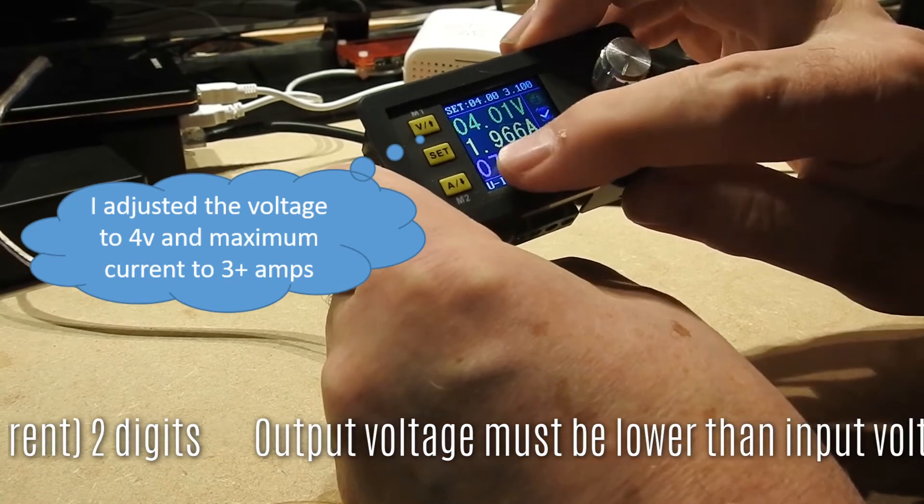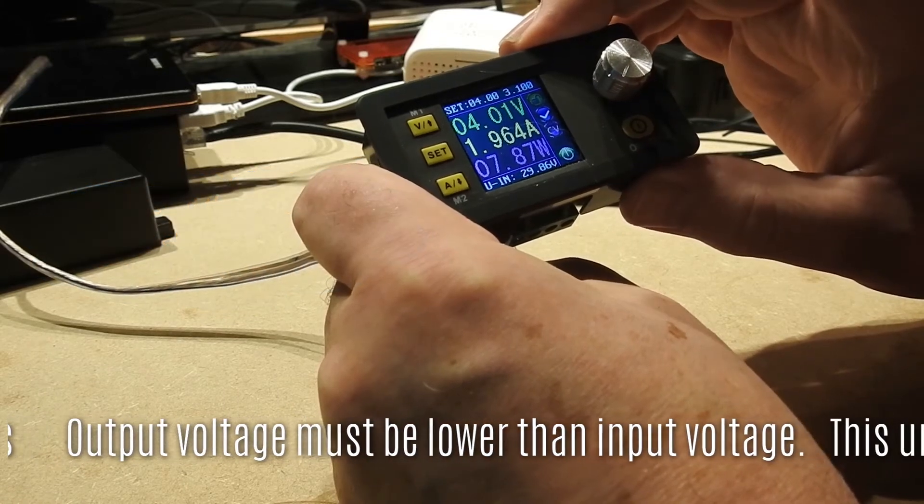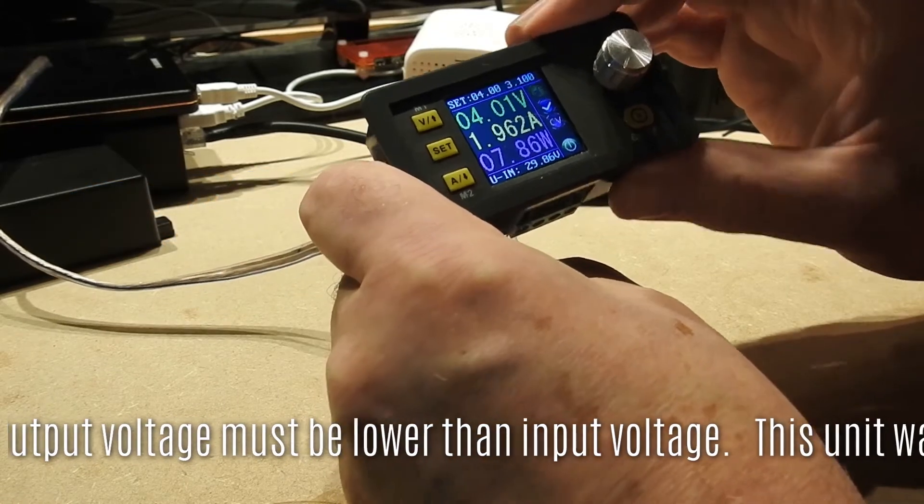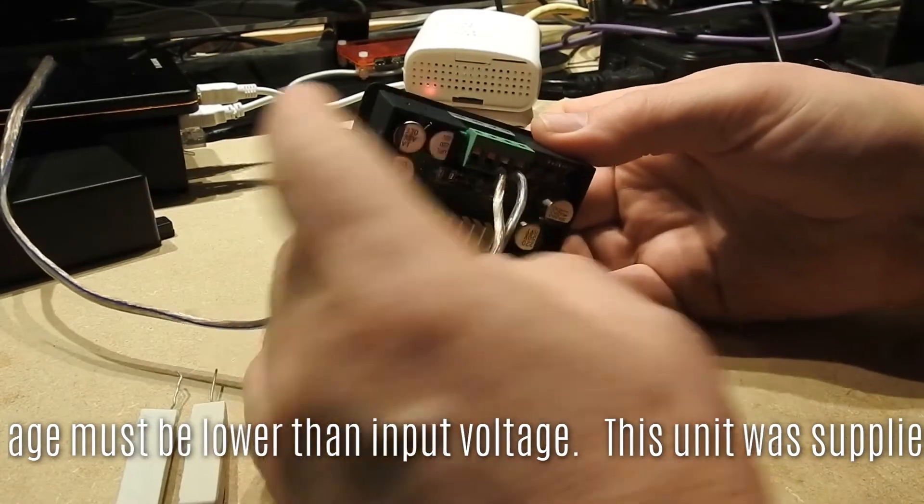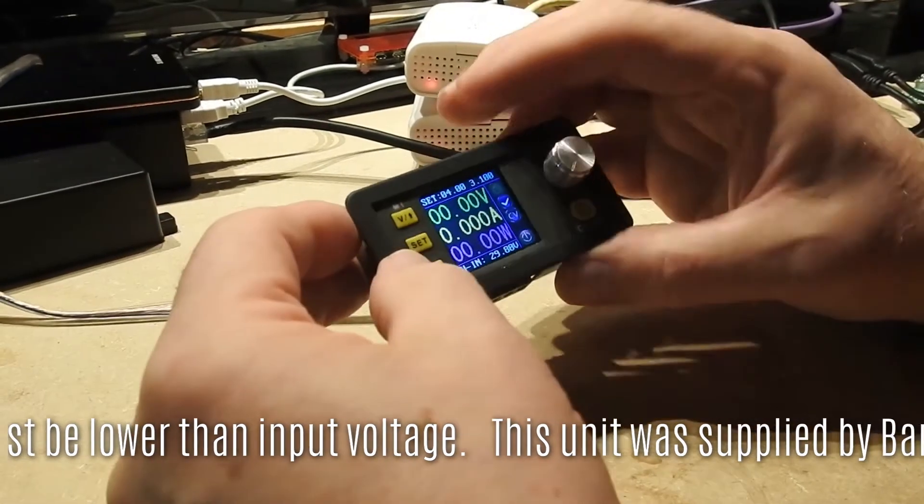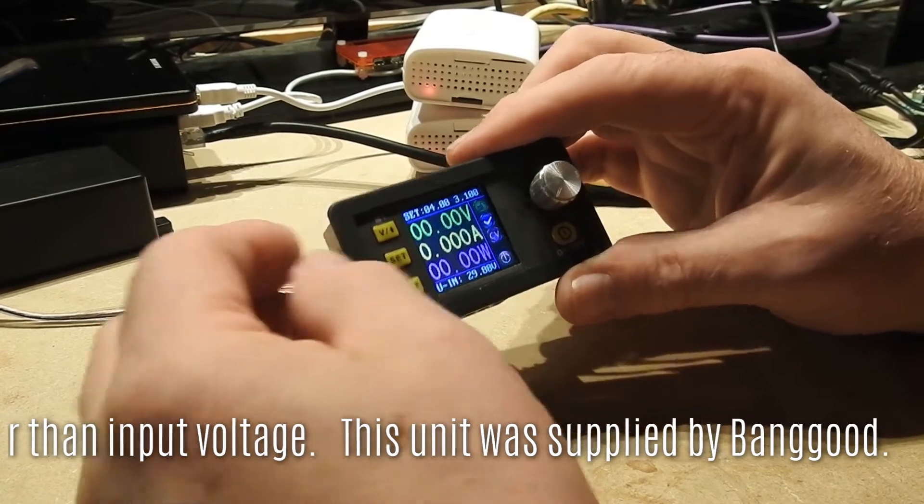And I'm looking at 1.96, nearly 2 amps there. So very steady voltage when you put a load on. This unit will handle 3 amps. I've just put 2 amps in. But I'd really like to have a fan running at the back before I put full current in for any length of time.